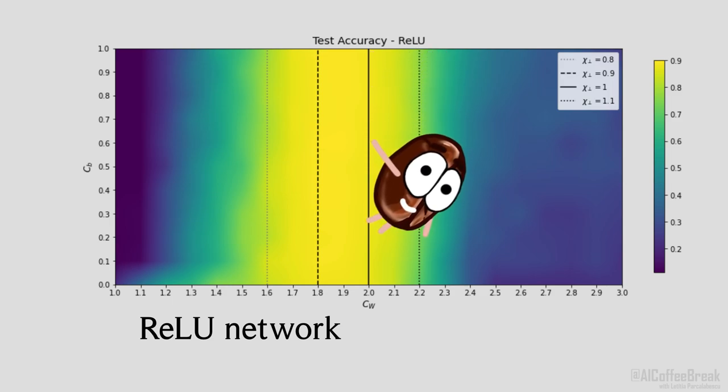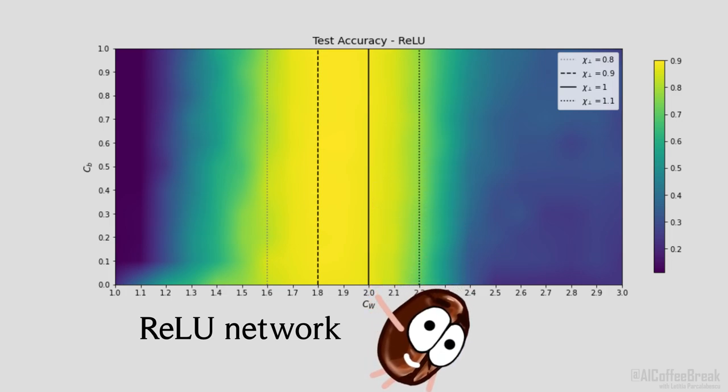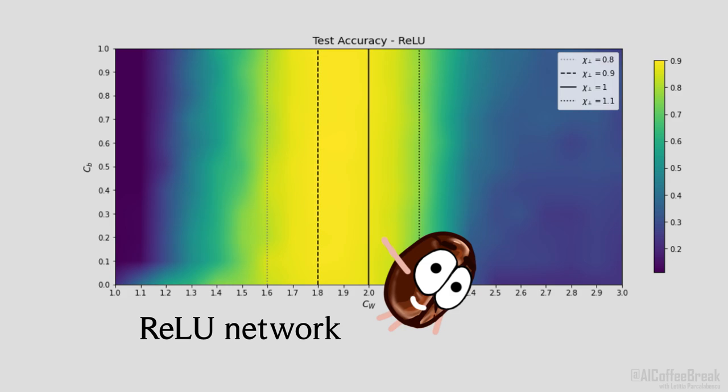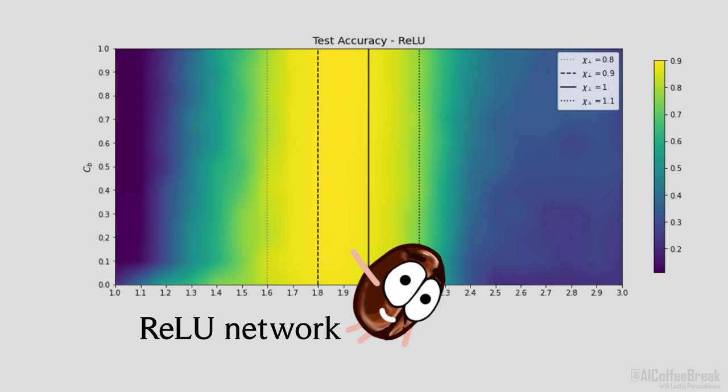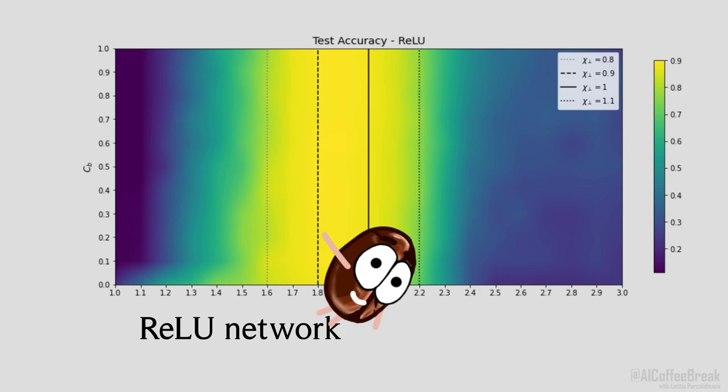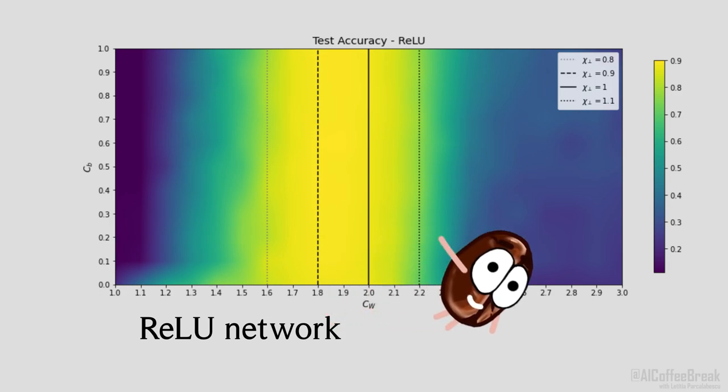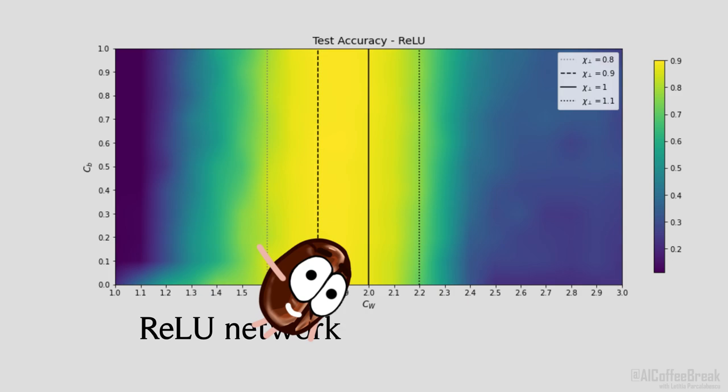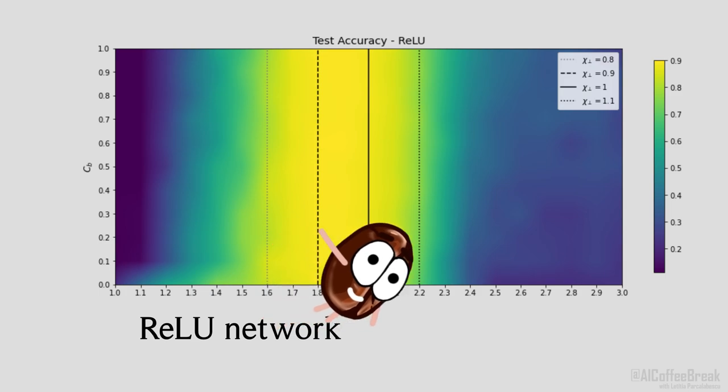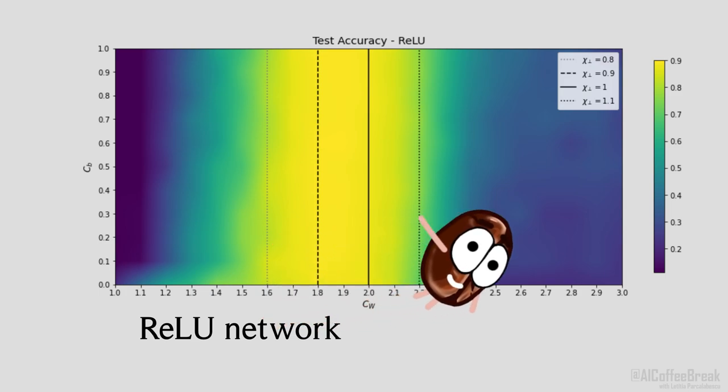The line represents the values of same perpendicular susceptibility, and the background color is the accuracy obtained on the test set. So basically, the brighter the better performant the network. The solid line is the theoretical optimum, which lies indeed in the region with the best accuracies, but values near the line also perform well. Performance drops off quicker for chi-perpendicular greater than 1 to the right of the solid line than for chi-perpendicular smaller than 1 on the left. This agrees with the idea that vanishing gradients are less bad than exploding ones. The yellow high accuracy is well enclosed by the dotted lines representing the range chi-perpendicular in between 0.8 and 1.1. Overall, this shows a very strong agreement between theory and practice.